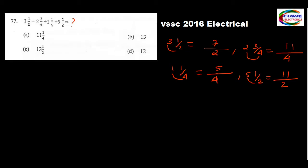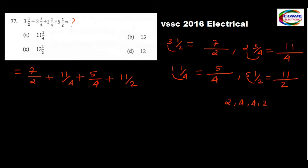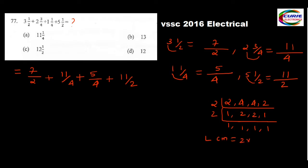So now all the numbers we got. This equals 7/2 plus 11/4 plus 5/4 plus 11/2. Now we will find the LCM. The denominators are 2, 4, 4, 2. Dividing by 2 we get 1, 2, 2, 1. Dividing by 2 again we get 1, 1, 1, 1. So LCM equals 2 multiplied by 2, which gives us 4. LCM is 4.